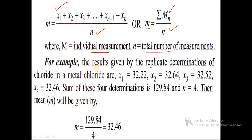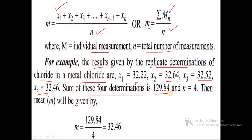For example, the results given by replicate determinations of chloride in a metal chloride are: x1 = 32.22, x2 = 32.64, x3 = 32.52, and x4 = 32.46. The sum of these four determinations is 129.84 and the number of values is 4. Therefore the mean equals 129.84 divided by 4, which equals 32.46.